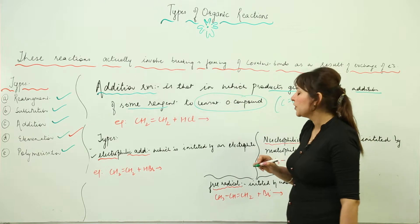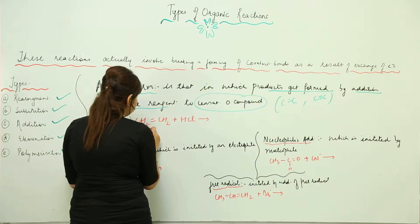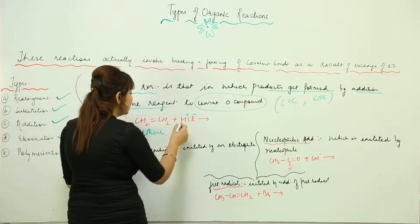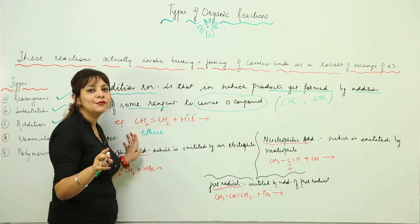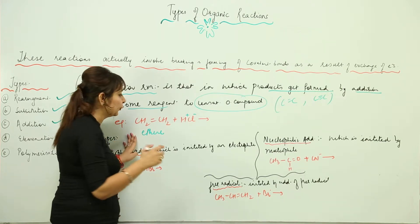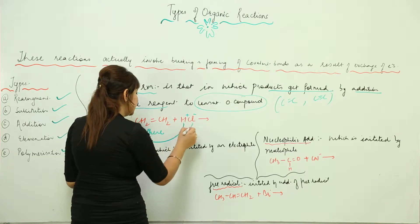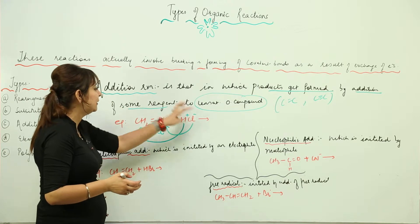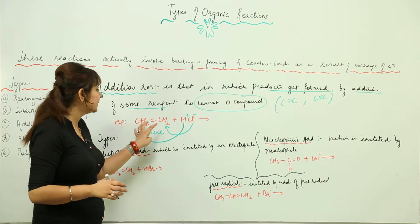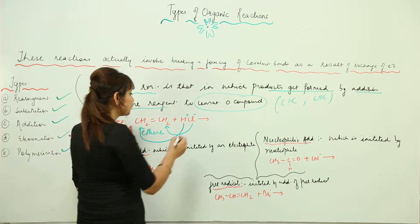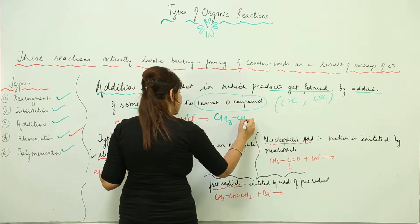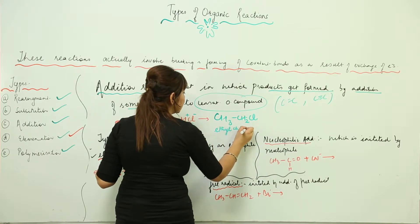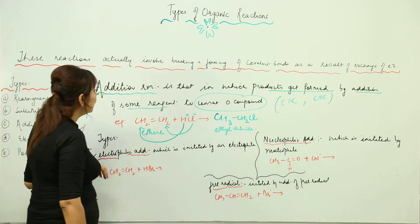Look at the example here: I have the alkene ethene and I'm going to add HCl. We always keep in mind we have to restore the valency of carbon as four. So this H will attach to one carbon and Cl will attach to the other carbon. There is no definite rule that hydrogen goes to one specific carbon in the case of symmetrical alkenes. So it becomes CH3CH2Cl, that is ethyl chloride or chloroethane.